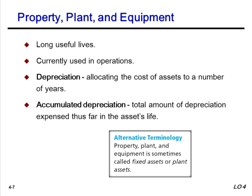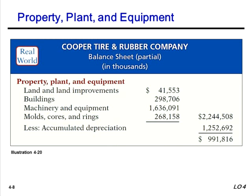For property, plant, and equipment: these are long-lived assets that represent a major commitment of funds. Depreciation is the allocation of the cost of the assets over their estimated useful life, and accumulated depreciation is a contra-asset account. As time goes on and we continue to depreciate the asset, the balance in accumulated depreciation will increase and the book value will decrease. There is an illustration of additional types of fixed assets that we will cover later in the semester.